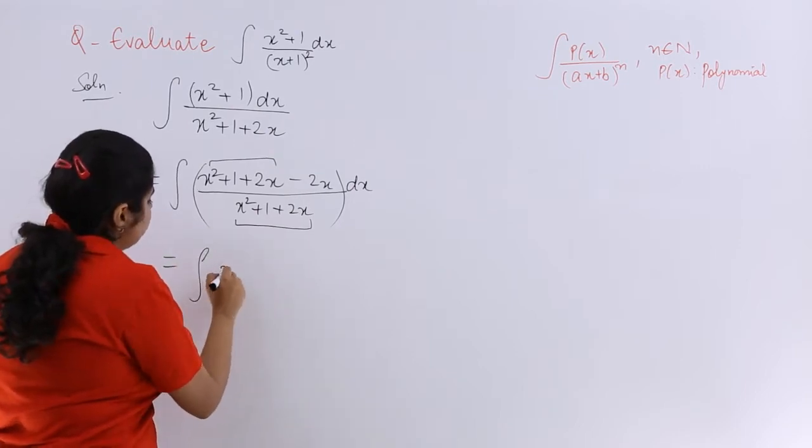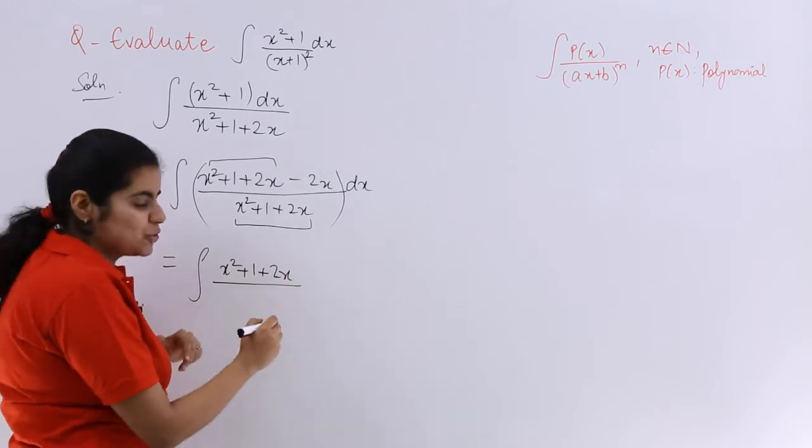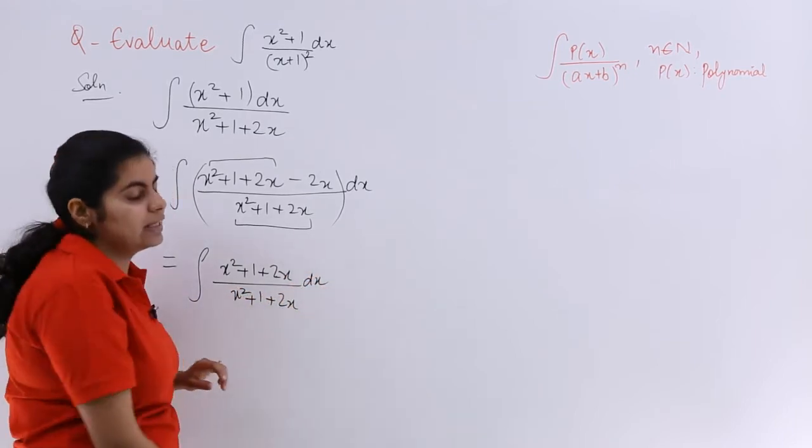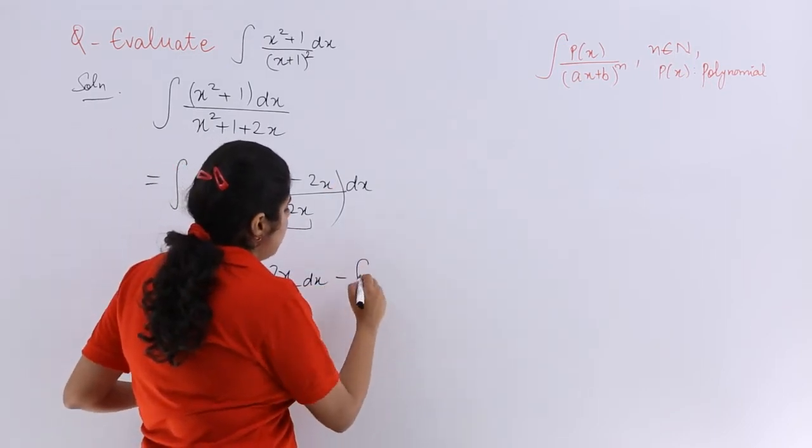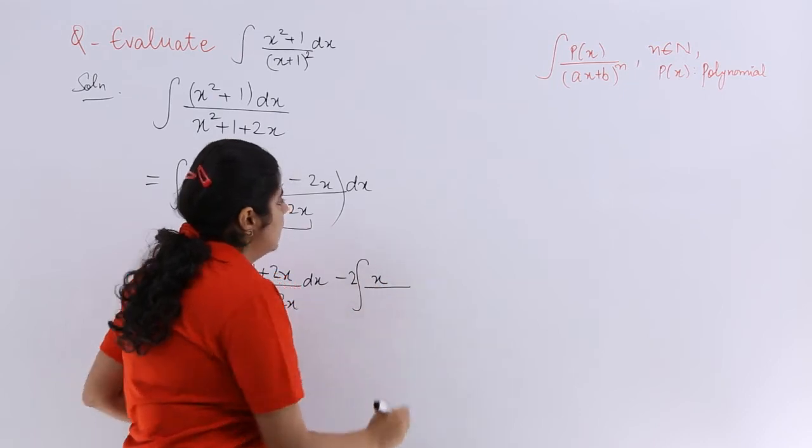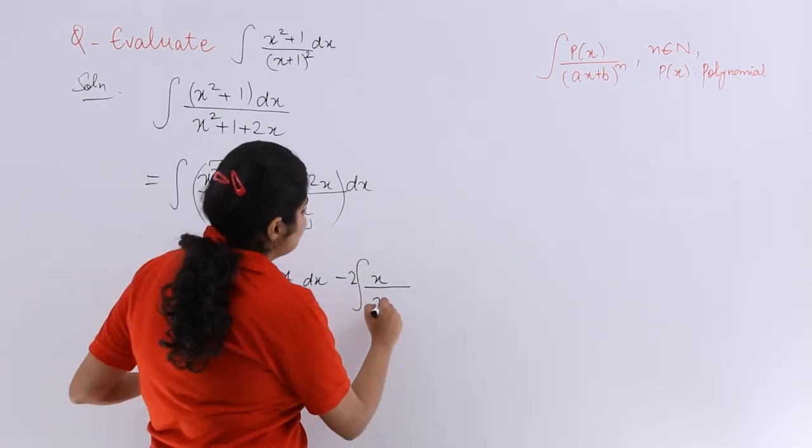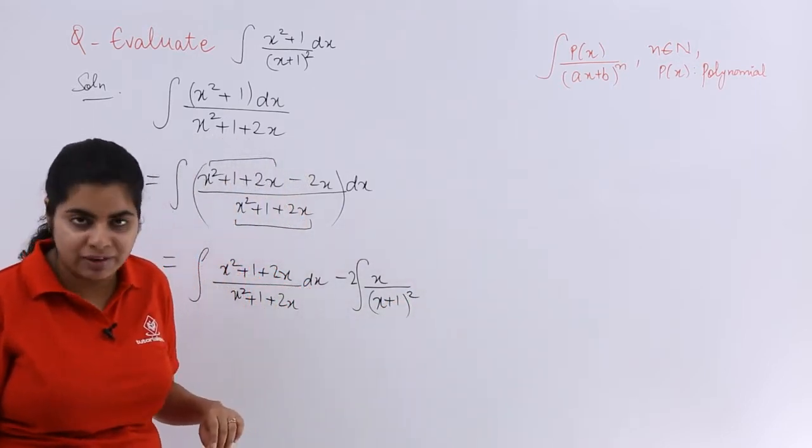So that means x² + 1 + 2x in the denominator too. I have x² + 1 + 2x, and separating the integrals dx here. And the other side becomes minus 2 coming outside, x here, and x² + 1 + 2x again. So x² + 1 + 2x is nothing but (x + 1) whole square.